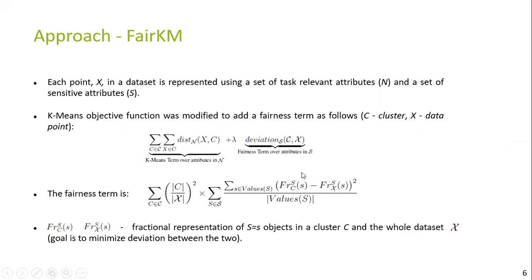The second term is the fairness term, which is expanded as shown. For every sensitive attribute S and for every possible value of that sensitive attribute denoted as lowercase s, we try to minimize the square of the difference between the fractional representation of S=s objects in a cluster and the fractional representation of S=s objects in the whole dataset. This deviation for the sensitive attribute is normalized by the number of values it may take. The cluster-level deviation is the sum of deviation of every sensitive attribute for that cluster, and this cluster-level deviation is weighted by the square of its fractional cardinality in order to avoid favoring creation of very large clusters.